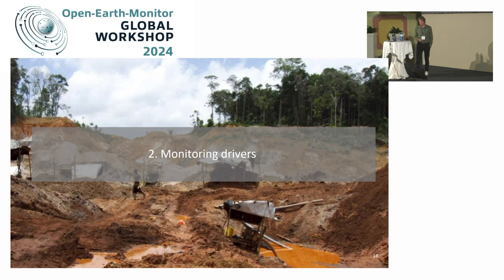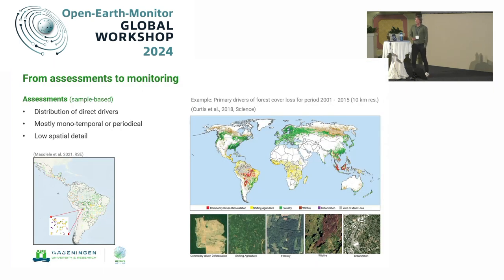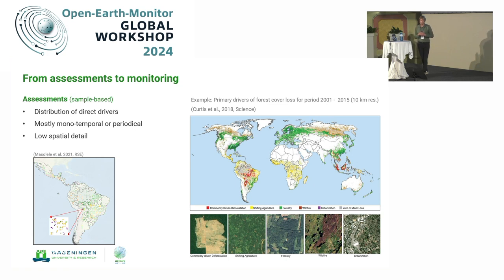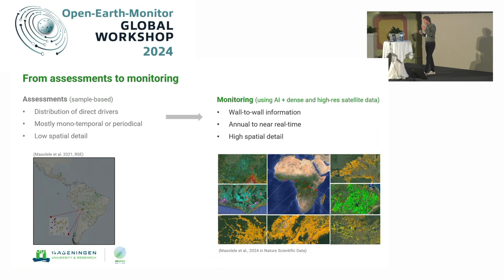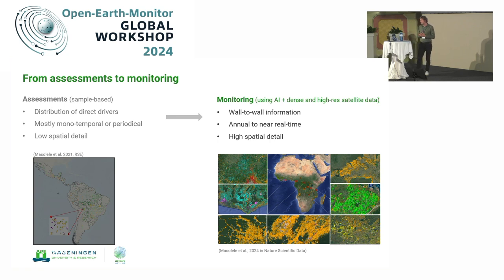The second part is monitoring drivers. Traditionally, driver monitoring has been done through sample-based assessments where the distribution of direct drivers was assessed — mostly monotemporal or periodical at a relatively low spatial resolution. One famous example is the Curtis dataset, which at 10-kilometer resolution mapped five different direct drivers. But with the availability of AI and dense high-spatial-resolution datasets, we can now make the step from periodic assessment to actual monitoring — mapping things wall-to-wall at an annual level or even near-real-time.